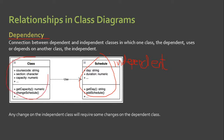And the Class here is our dependent class. If the independent class is changed, it may cause changes to the other — automatically, the dependent class which is the Class will be changed as well.